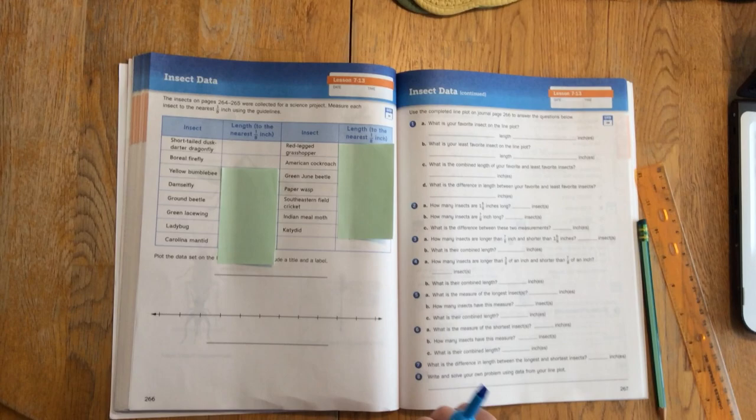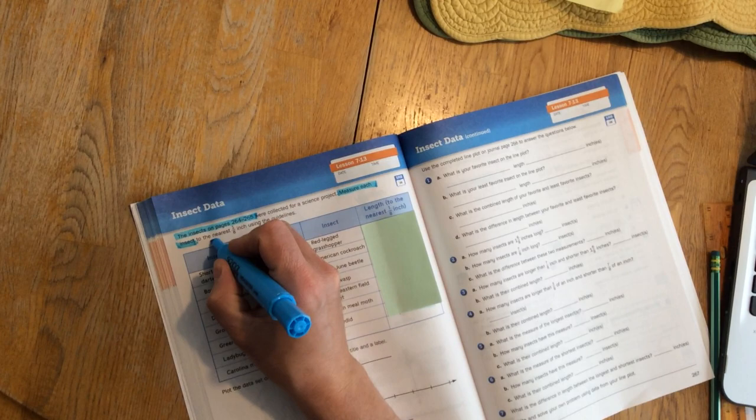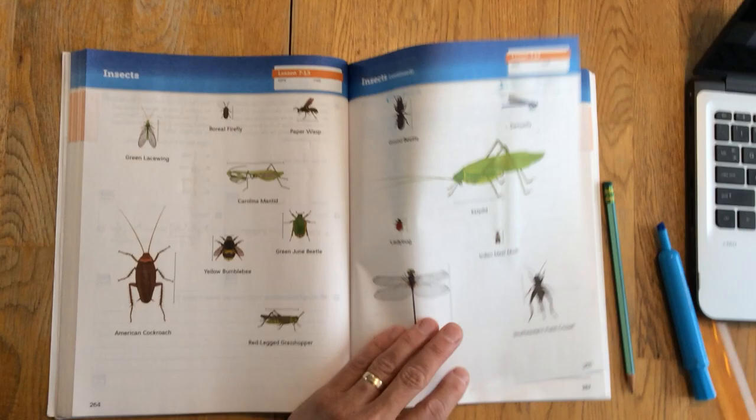I'm going to pause here on page 266 for just a moment to show the instructions. The insects on pages 264 and 265 were collected for a science project. Measure each insect to the nearest eighth of an inch using the guidelines. Okay, so I'm going to need a pencil and a ruler to solve these problems.